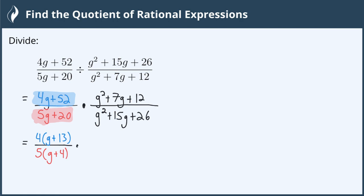Now we're going to multiply by our second fraction, which we are also going to factor. So when we're looking at g squared plus 7g plus 12,